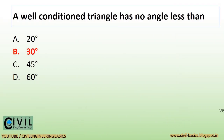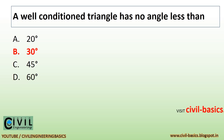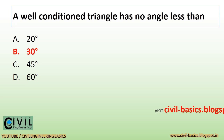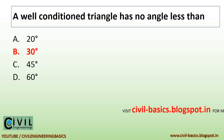A well-conditioned triangle has no angle less than 30 degrees.